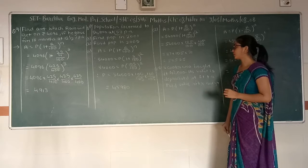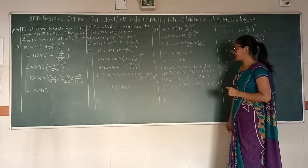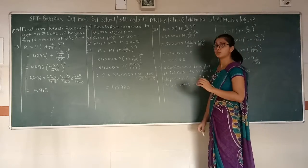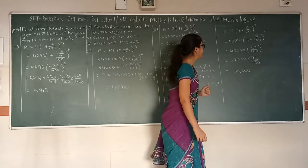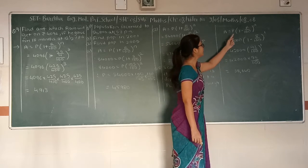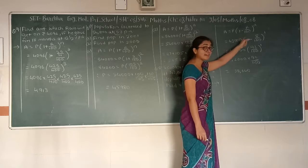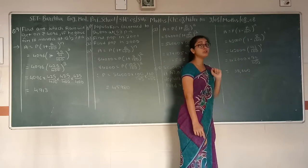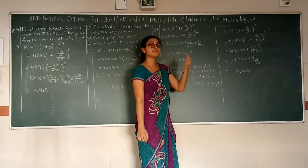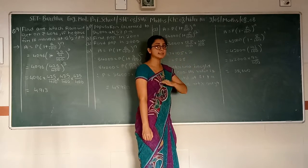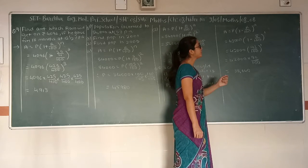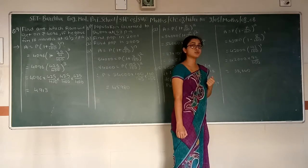A scooter was bought at 42,000 and its value is depreciated at 8% per annum. Find the value after depreciation. As there is depreciation, we will write the formula as A is equal to P into bracket 1 minus R upon 100 raise to N, because there is depreciation in the asset and the value of the asset is decreasing.